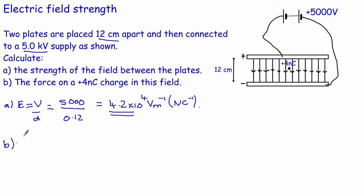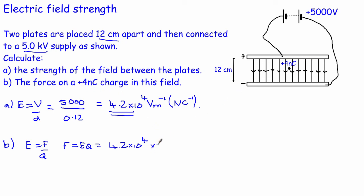Now we know the electric field strength, so we can find the force on a 4 nanocoulomb charge placed inside this field. Using E = F/Q, rearranged to F = EQ: E = 4.2 × 10⁴, and Q = 4 nanocoulombs = 4 × 10⁻⁹ C. This gives F = 1.7 × 10⁻⁴ newtons. Because force is a vector, it also has a direction — in this case, downwards.